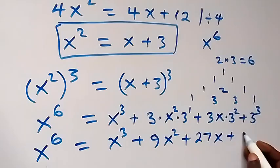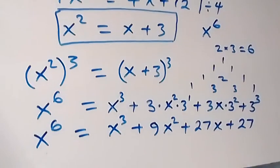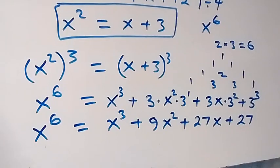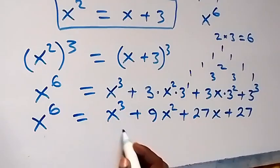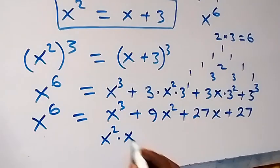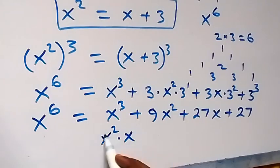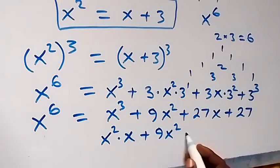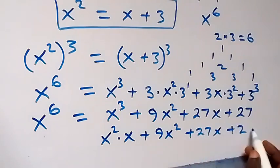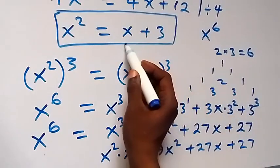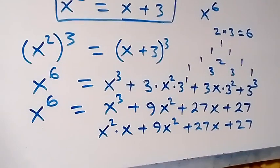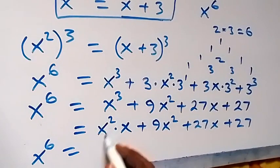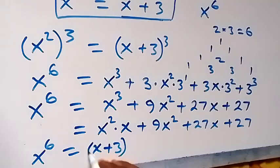From here we can separate x³ as x² times x. Using the law of indices, x⁶ equals x² times x plus 9x² plus 27x plus 27. We can recall that x² is the same thing as x plus 3, so when we bring this substitution in, x raised to power 6 equals (x plus 3) times x, then plus 9 times (x plus 3), then plus 27x plus 27.